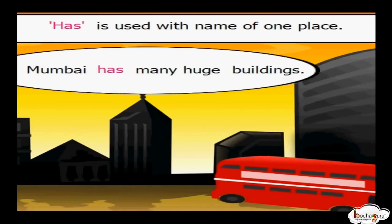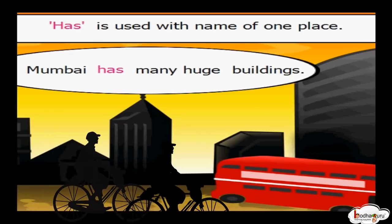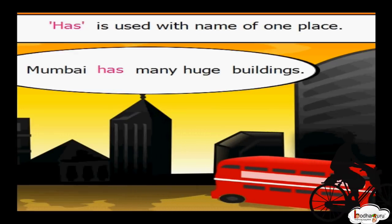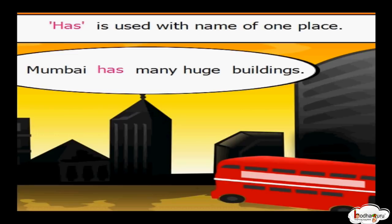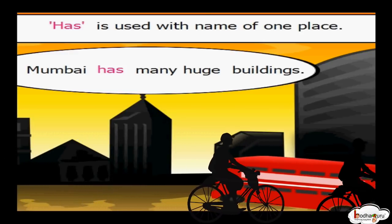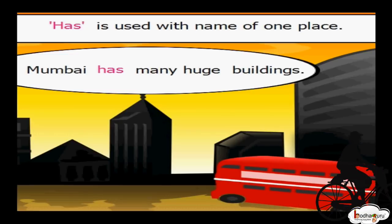Mumbai has many huge buildings. 'Has' can be used with the name of one place. Mumbai is the name of a city, so we use 'has' to tell what Mumbai has. We can say, a village has many huts. A village means one village, so we use 'has'.